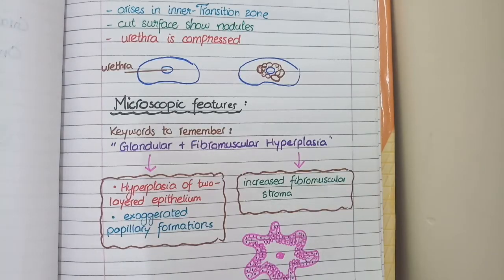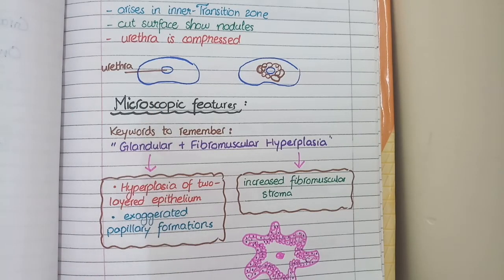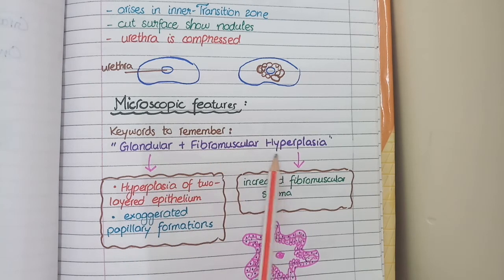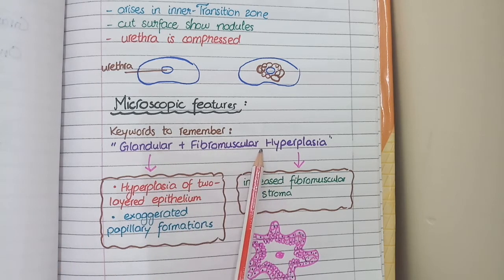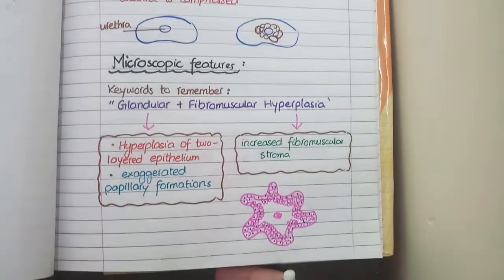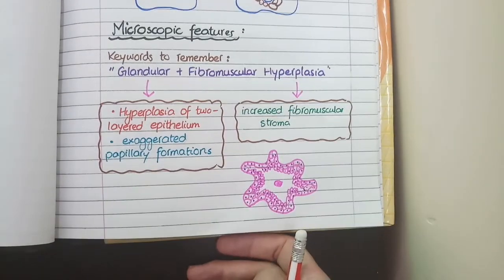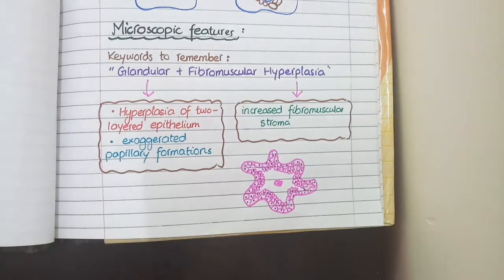Now let's come to the microscopic features of benign prostatic hyperplasia. The keywords to remember are glandular plus fibromuscular hyperplasia. The normal prostate gland is made up of two elements — glandular elements and fibromuscular elements — and in benign prostatic hyperplasia, there is hyperplasia of both these elements.